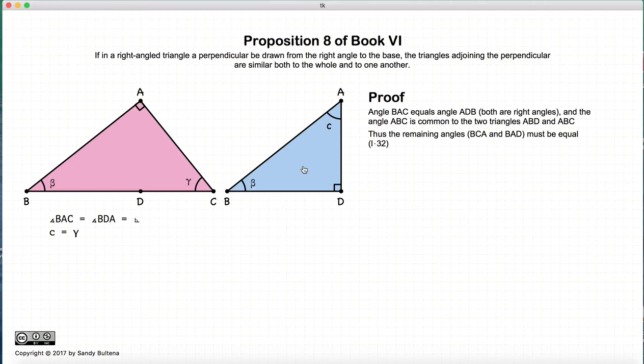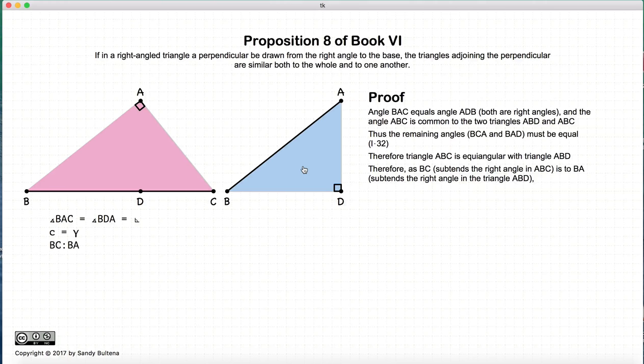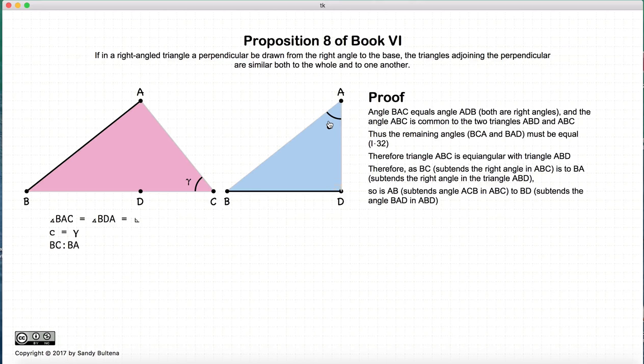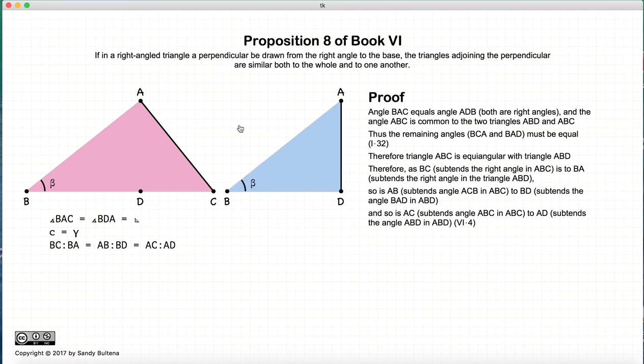So these two triangles are equal angular. And if they're equal angular that means that the ratio of the sides of the triangles opposite the right angles, so BC to AB, will be equal to the ratio of the sides opposite the angle gamma and C because they're both equal. So the previous ratio was BC to BA, that will be equal to AB to BD, which will also be equal to AC to AD, again because it is the side of the triangles that are opposite the angle beta.